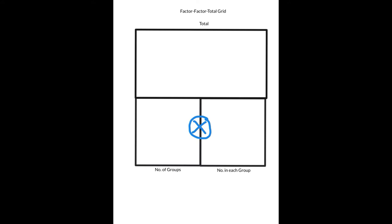At this point we have a factor-factor and we could say product up here grid, but in reality I like to call it a total grid. That way, when we take a look at the inverse operation of division, we'll be able to think of it as the total and not get hung up with the language of 'product.'